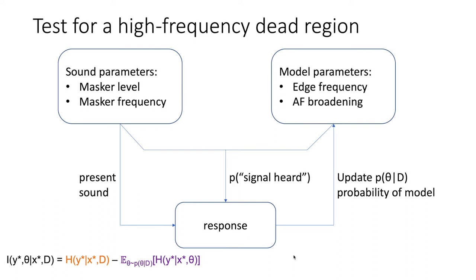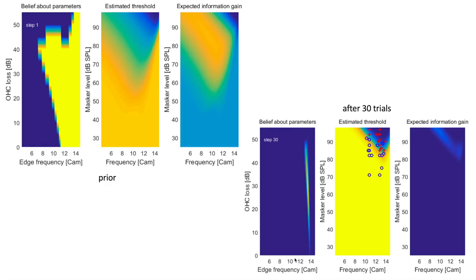We choose that based on mutual information. The mutual information is the uncertainty of the response minus the expected uncertainty when the model parameters are known. So we want to probe around detection probabilities of 50%, but only if the uncertainty stems from a disagreement between model parameters that we previously find equally likely. We don't want to query where we already know the threshold is and simply get 50% response probability — we want to discriminate between candidate models, not flip a coin. After we obtain a response, we update our belief about the model parameters and repeat the procedure. We start with some prior belief, in our case a uniform prior across the model parameters. Based on the signal frequency and a prior audiogram, we can already exclude lower frequencies as candidate edge frequencies.